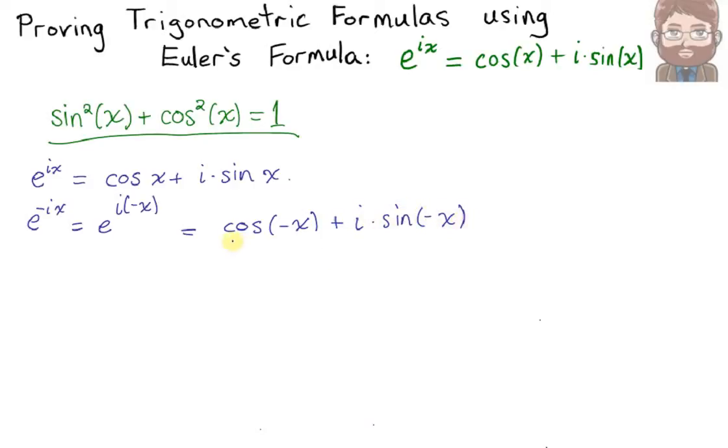Furthermore, since cosine is an even function, cosine of negative x is equal to cosine of x. And since sine is an odd function, sine of negative x is negative sine of x. We'll write the negative out in front of the i.